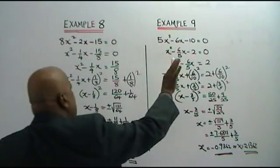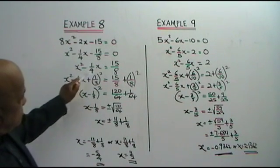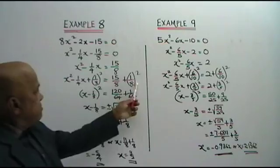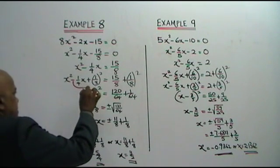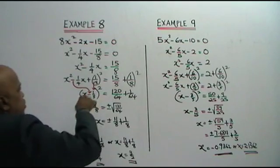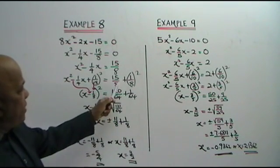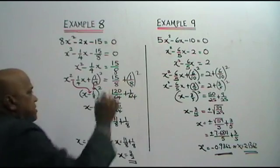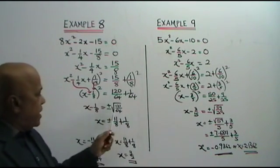Negative 15 over 8, bring to the other side. Now, you take this 1 over 4, divide by 2, square it, and add to both sides of the equation. Look at this sign — it is negative. So we complete the square like this: bring this 1 over 8 down here, put a bracket — x minus 1 over 8 squared. We have completed the square. This equals to 120 over 64 plus 1 over 64, which is 121 over 64. So the square root of 121 over 64 is 11 over 8.